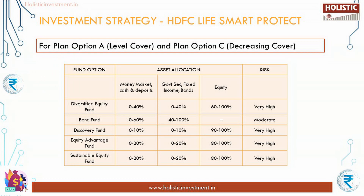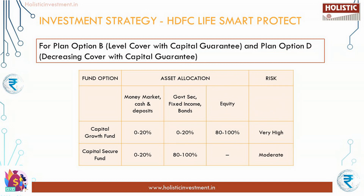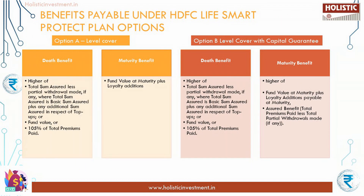For plan options A (Level Cover) and C (Decreasing Cover), five fund options are available. The policyholder may choose to put premiums in one or more of these funds in any desired proportion and can change this allocation during the policy term. For plan options B and D (with capital guarantee), the premium received will be allocated to the capital growth fund and capital secure fund only, with allocation proportion and rebalancing solely determined by the company.